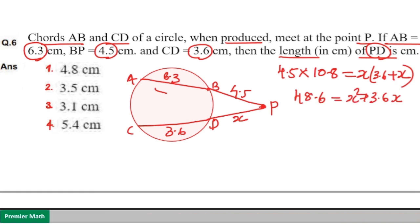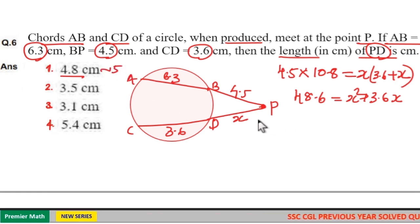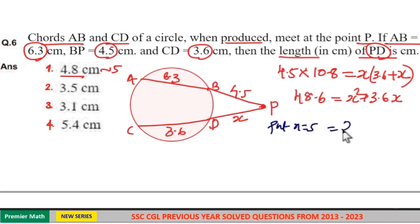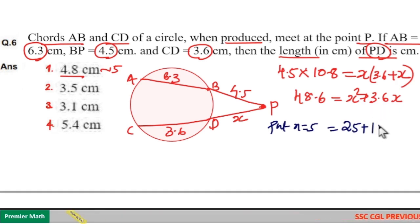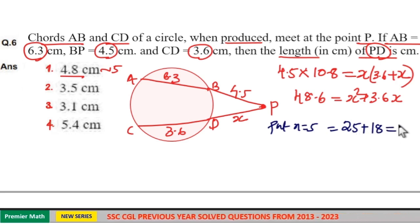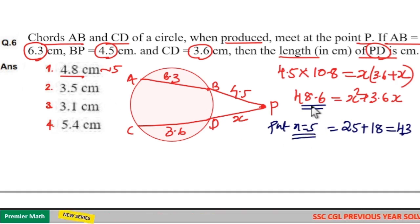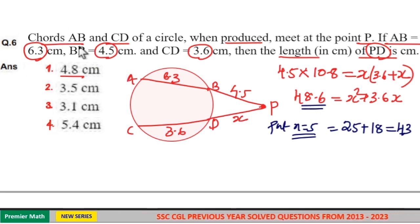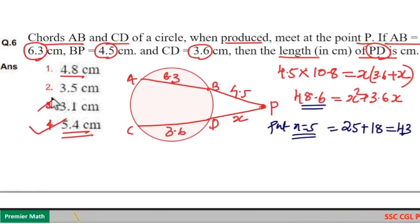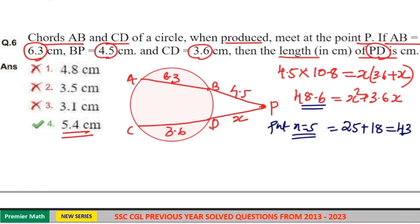Now don't go for the calculation — use option verification. First option is 4.8; approximate as 5. Put X equals 5: X squared is 25, plus 3.6 into 5 equals 18. So 25 plus 18 equals 43, which is less than 48.6. Even with X equals 5 you get a lesser value, so 4.8 is not the answer. Options 2 and 3 also eliminated. So option 4 is your answer. Always use option verification whenever you have complex calculation.